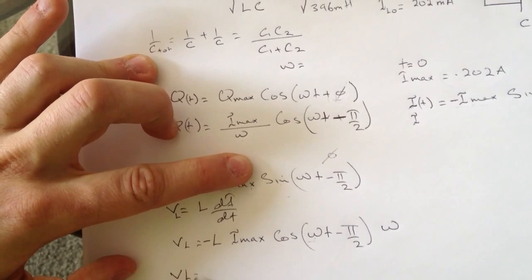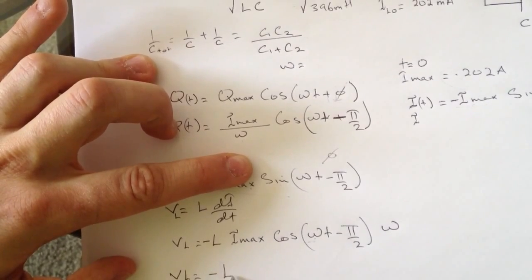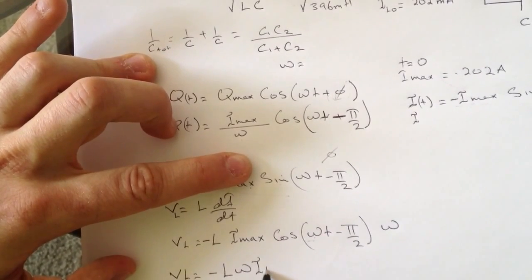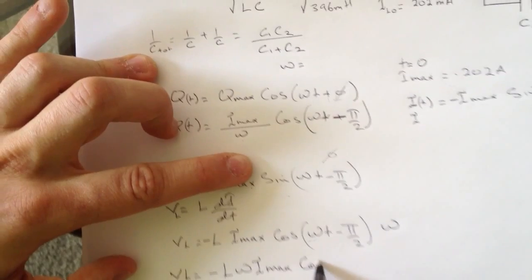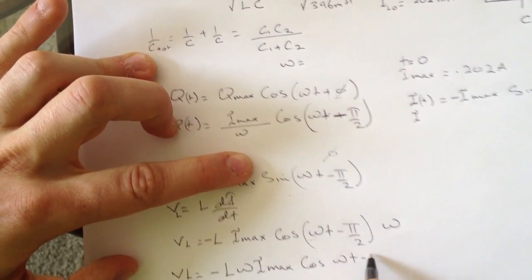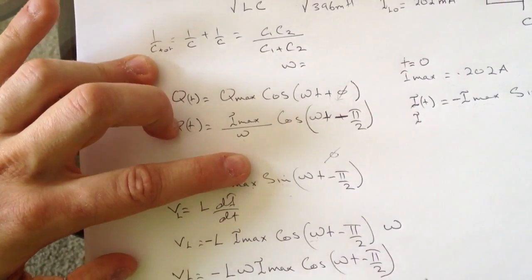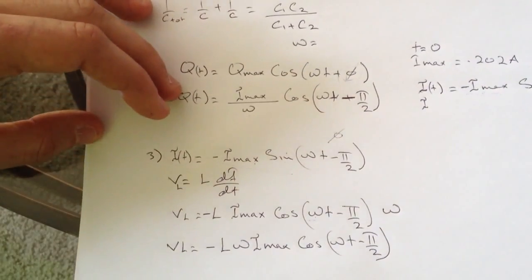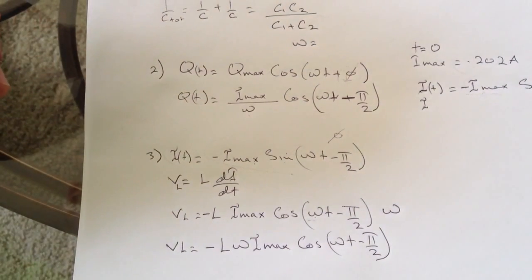The sine will go to cosine omega t minus pi over two, and then differentiate the inside which is omega. So V_L equals minus L omega I max cosine of omega t minus pi over two. Just plug in the numbers you have and you'll get the answer.